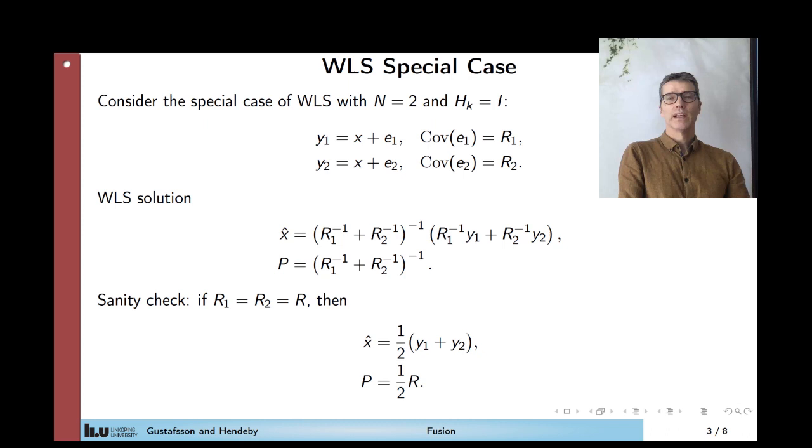So that means that you have two equations, y1 which is x plus e1, and y2 which is x plus e2. And you want to combine these two measurements to get the best possible observation of x.